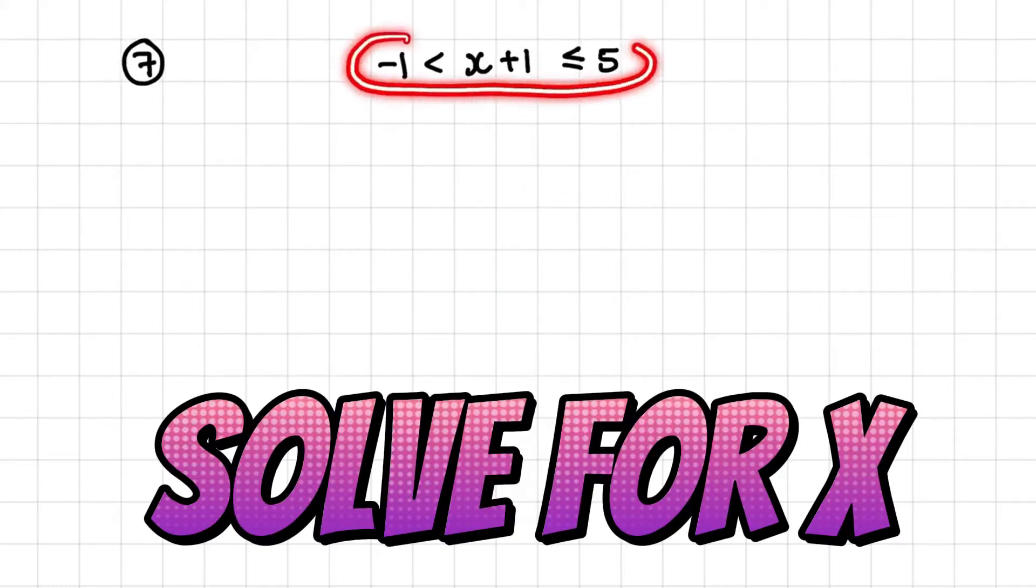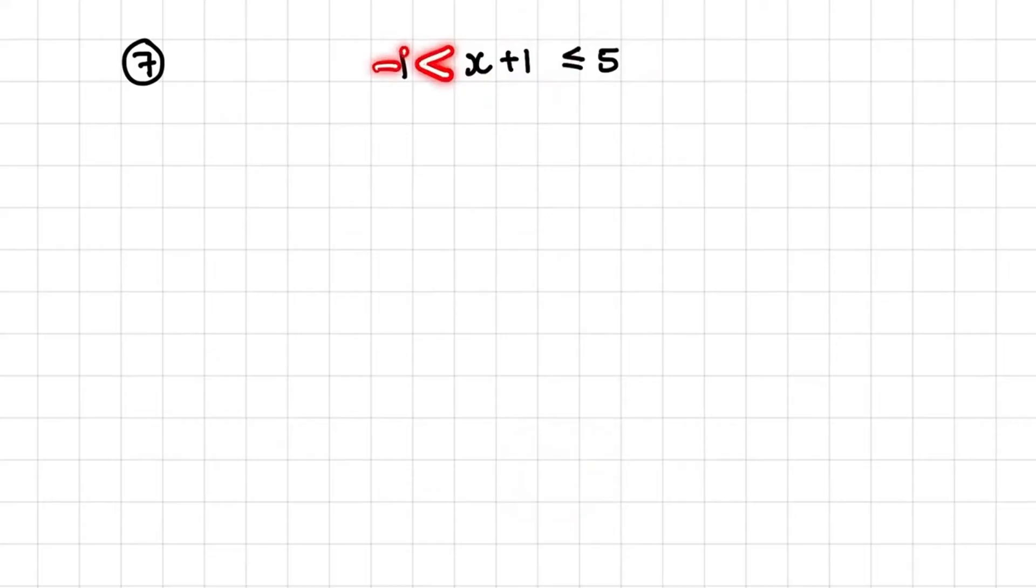We have a double inequality where x plus 1 is bigger than negative 1 and x plus 1 is smaller or equal to 5. Notice that I'm reading the inequality from the position of the variable.